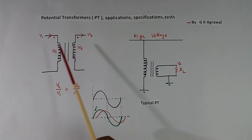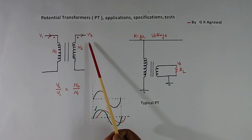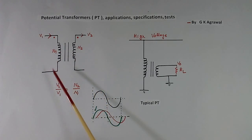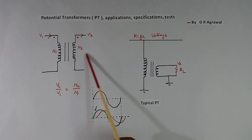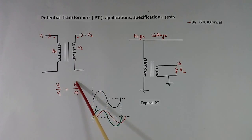The voltage ratio of secondary to primary — V2 by V1 — is equal to the turn ratio N2 by N1.